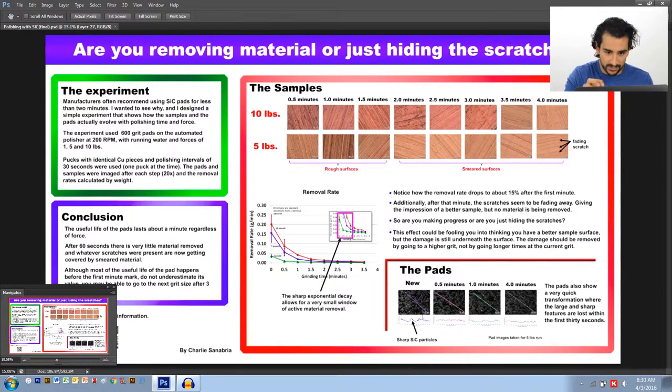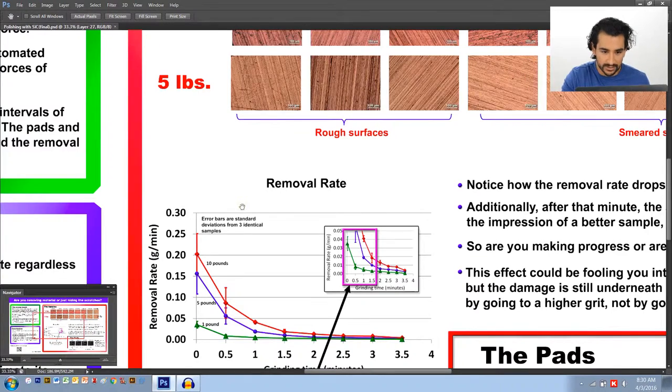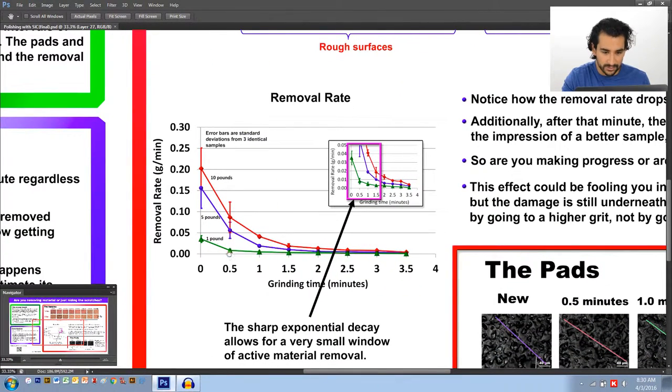But what I found out, at least with this grit size, is that the material rate plummets very quickly. Within the first minute or so, you're down to about 15% of your material rate removal. And you may say, well, if I use a low force, maybe they last longer, right? But that's not the case. Look at the one pound trays, this green one. 30 seconds after you've started, you're down to 30% of your material rate effectiveness. So keep that in mind when you use these pads.